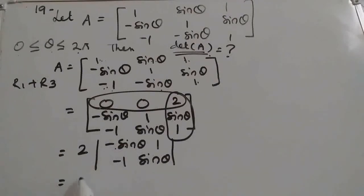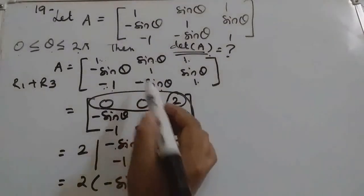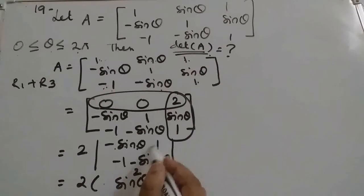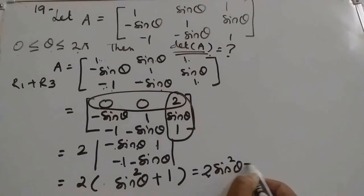So minus sin theta, sin square theta will come. Here this is minus, so plus sin square theta plus 1. So what is the answer? 2 sin square theta plus 2.